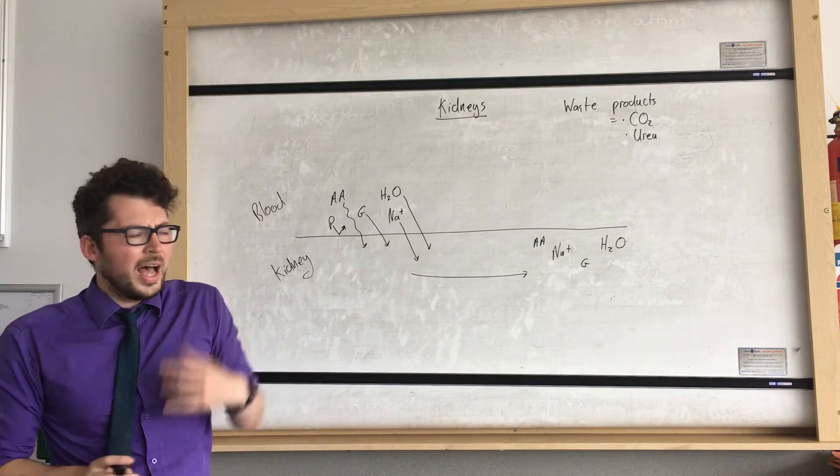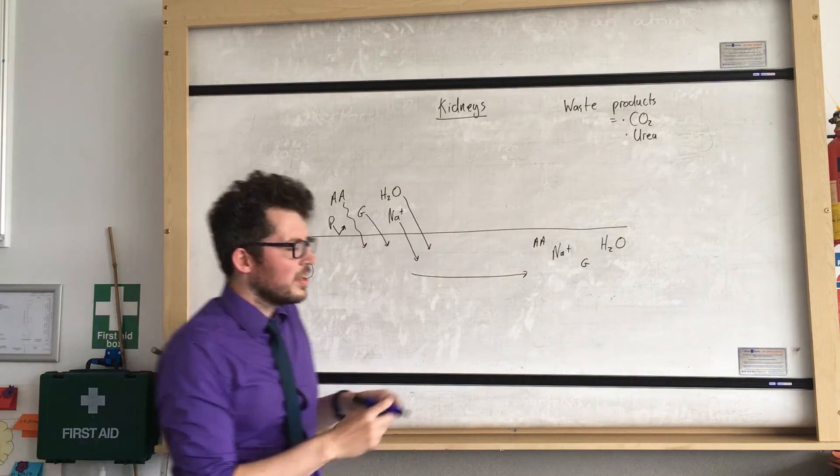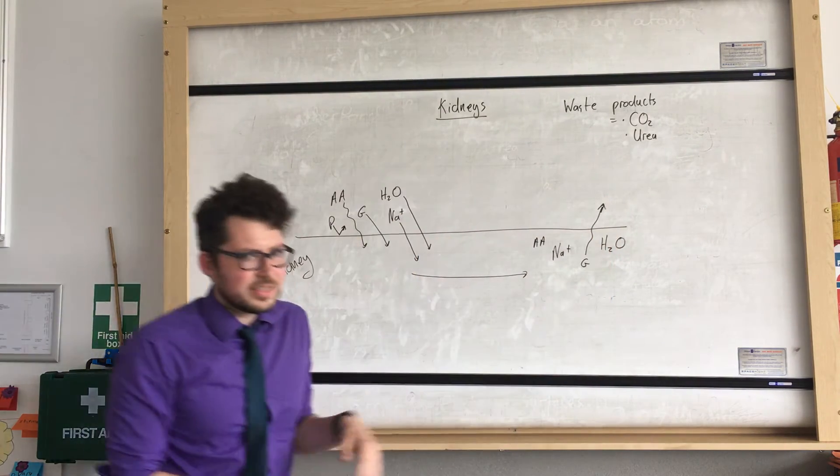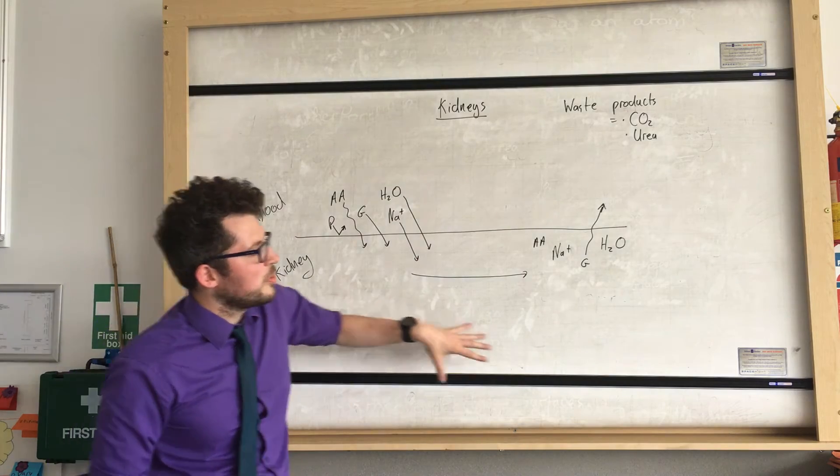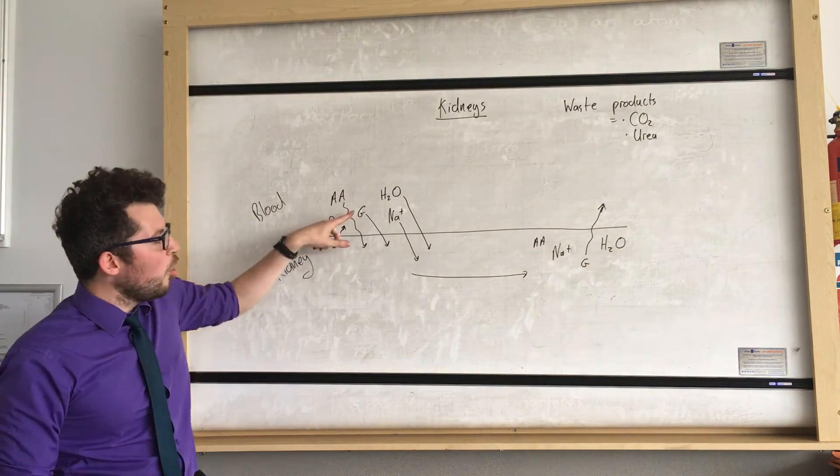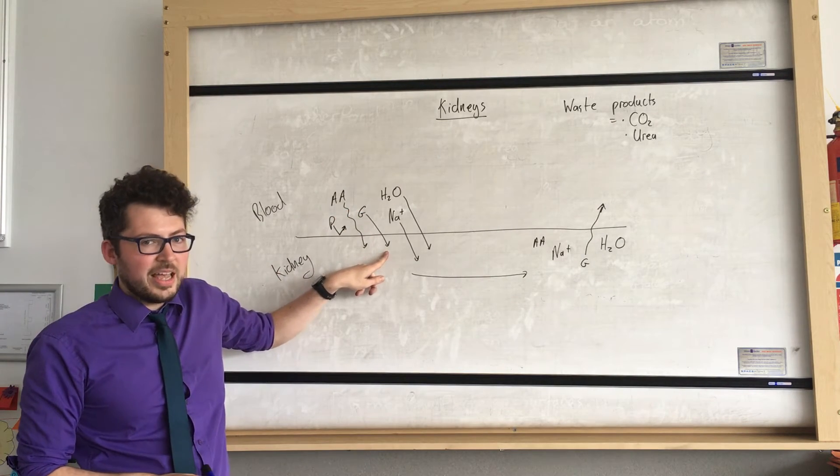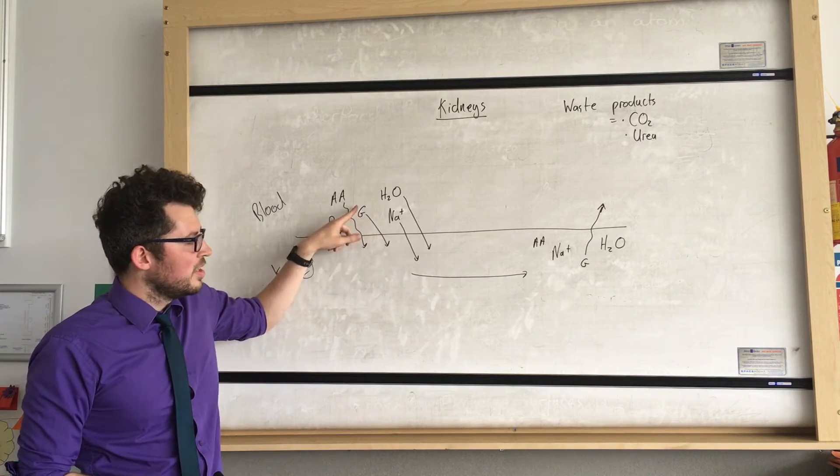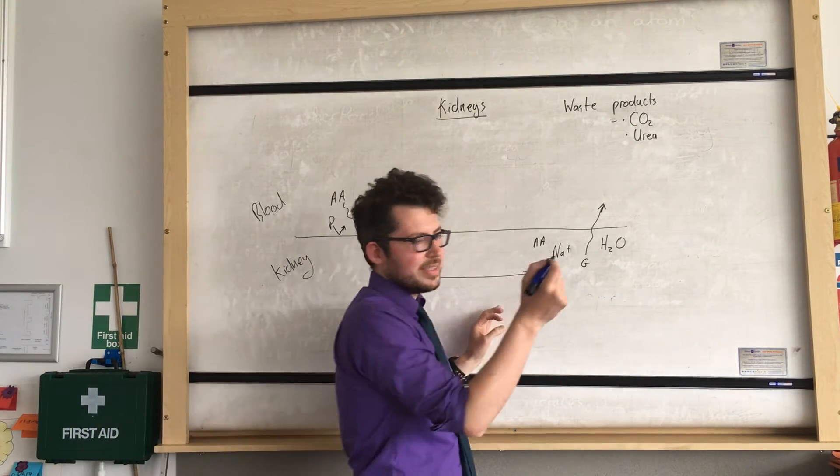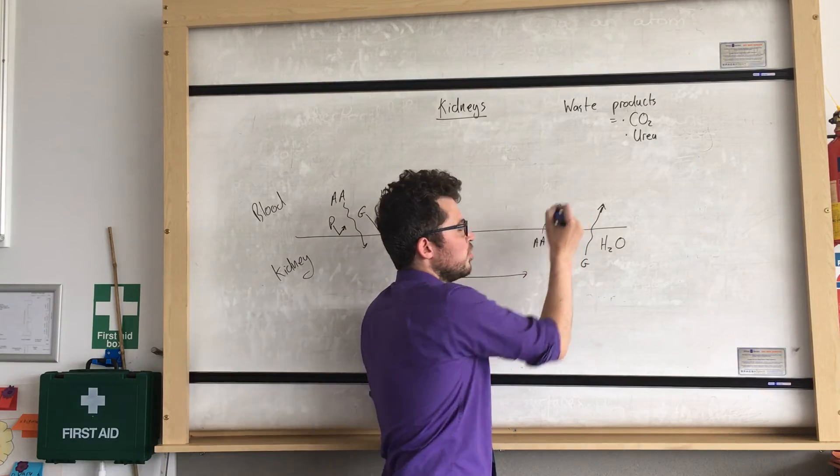Now what happens is all of the glucose is reabsorbed. So it's a key point. That word reabsorbed means reabsorbed back into our blood so it can be carried around our body. Another key point is that all of the glucose is filtered out of the blood here. So all of the glucose in our blood moves into the kidney originally. All of the amino acids are reabsorbed into our blood.